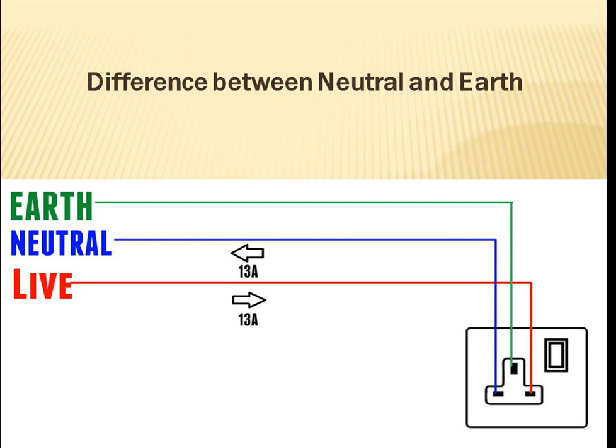Today I am going to tell you about the basic difference between neutral and earth wire. In our normal system we use three wires. In a single-phase system, one is the live wire, another is the neutral wire, and the third one is the earth wire.